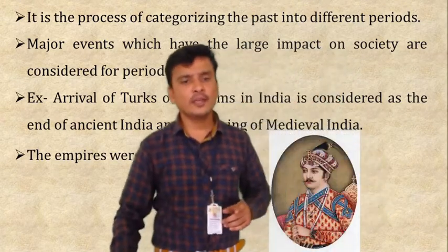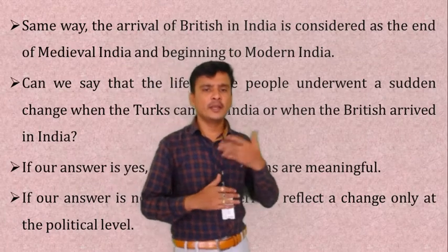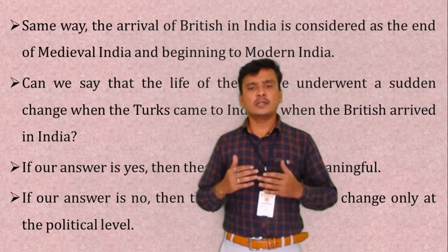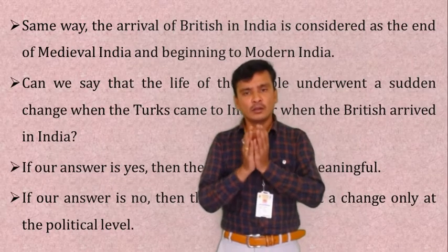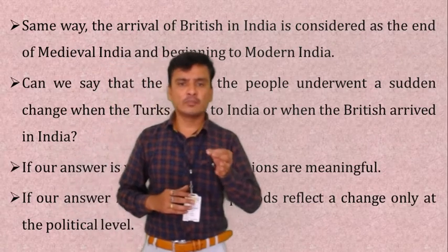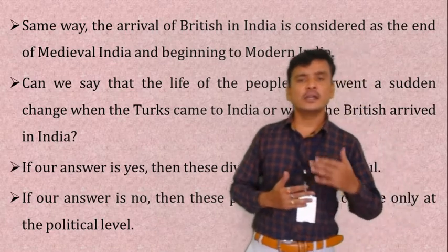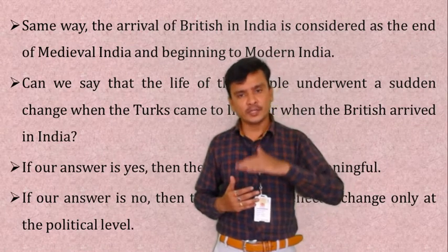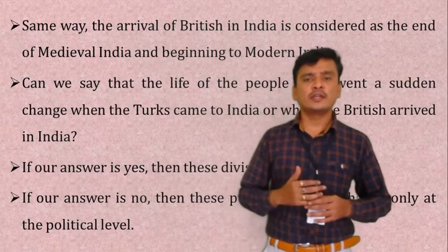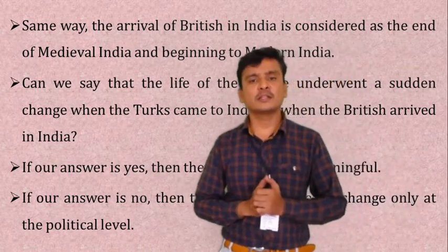In the same way, the arrival of the British in India is considered as the end of medieval India and the beginning of modern India. When the British came to India in 1600, they came just for business and trading. But in 1757, with the Battle of Plassey, they won and entered Indian politics. That is why the 18th century is considered the end of the medieval period and the beginning of the modern period. Some historians also consider the death of Aurangzeb in 1707 as the end of the medieval period — and both events occurred in the 18th century.